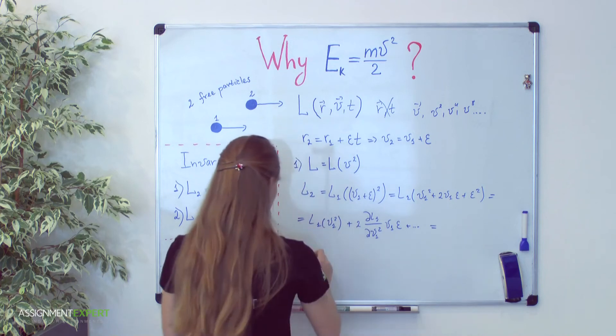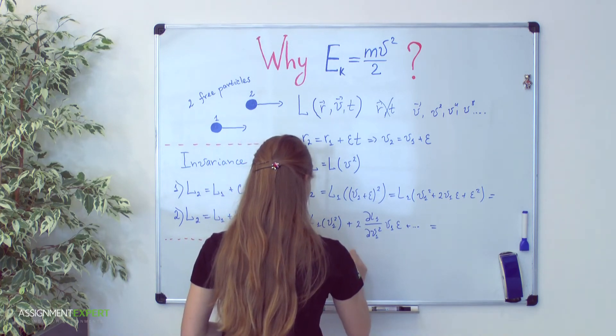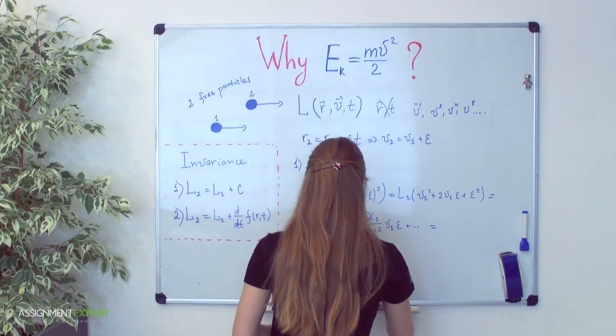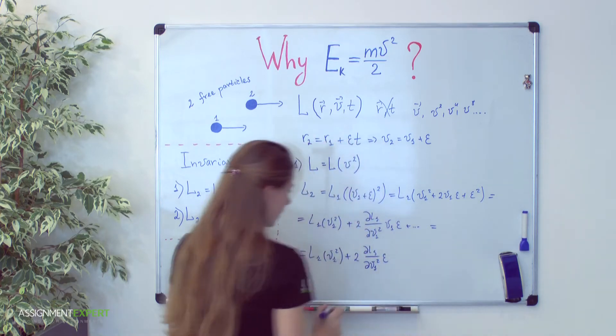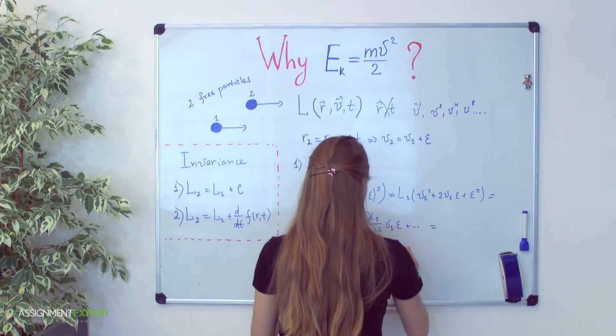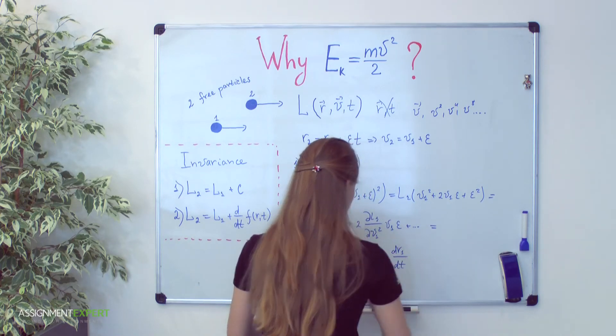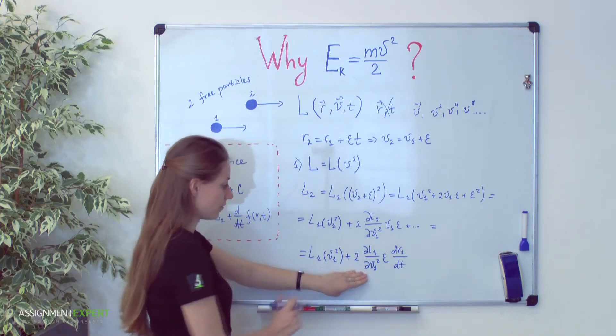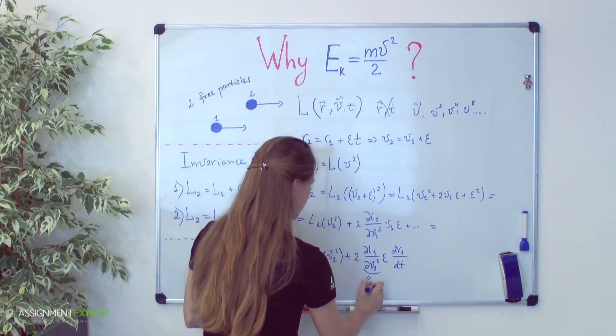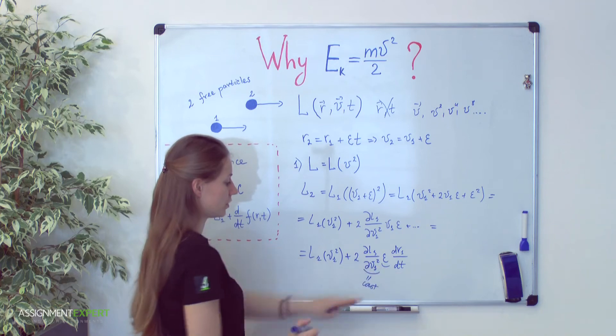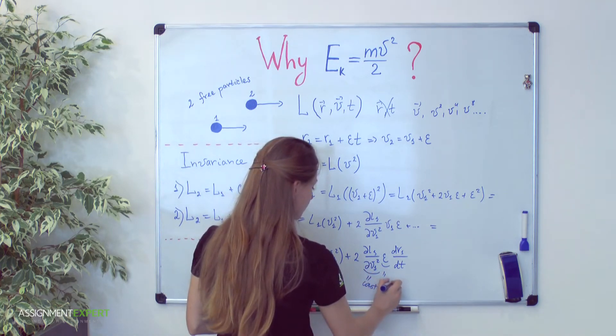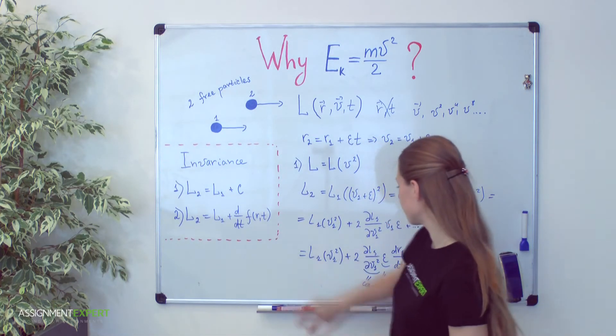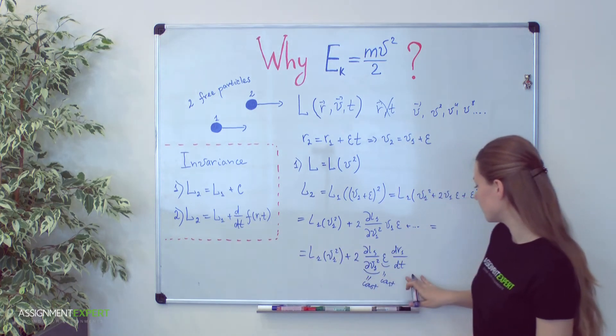You see that as our Lagrange function depends quadratically on velocity, this is simply a constant. Epsilon, our velocity, is constant by definition. And here we have full-time derivative of coordinate function. According to our second property, we see that Lagrange function is invariant under such transformation.